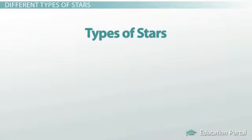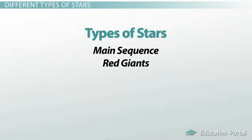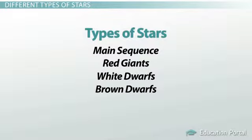Some of the different stars in our galaxy include main sequence, red giants, white dwarfs, and brown dwarfs. But before we talk about the different types of stars, let's start by talking about how stars are born.